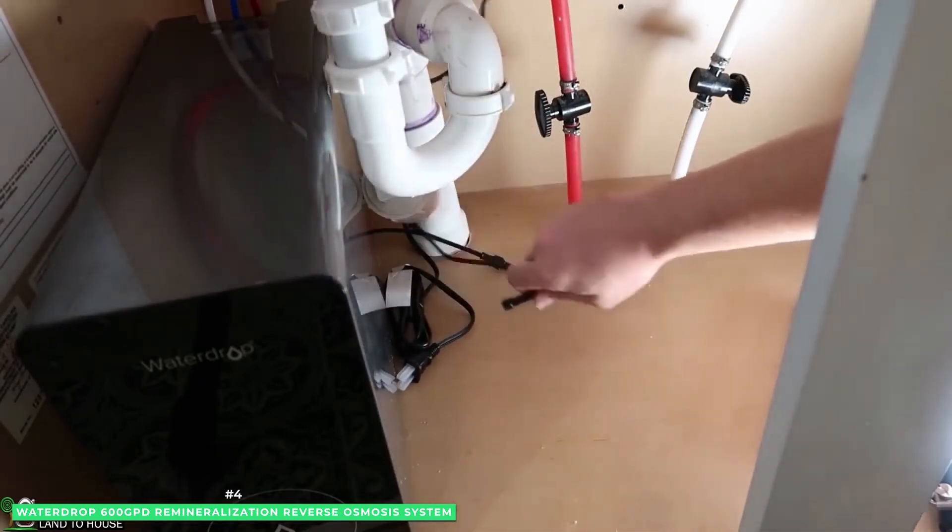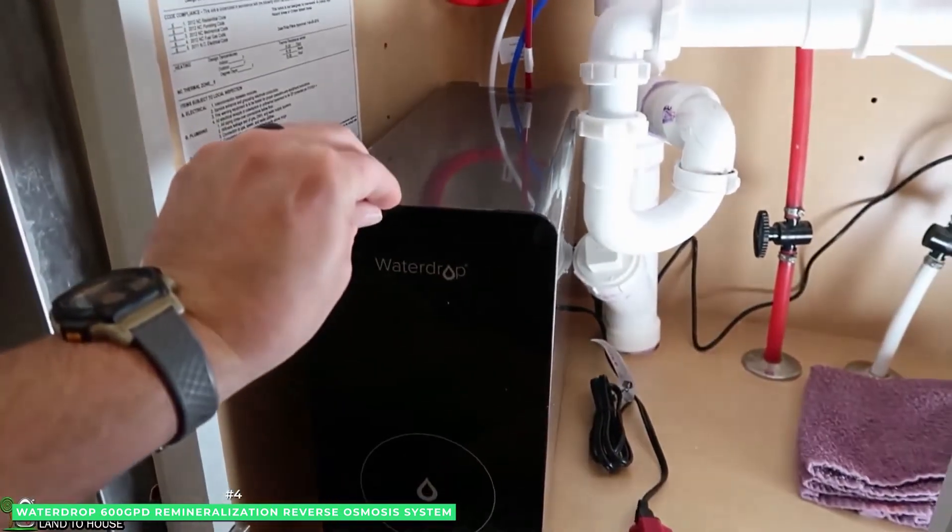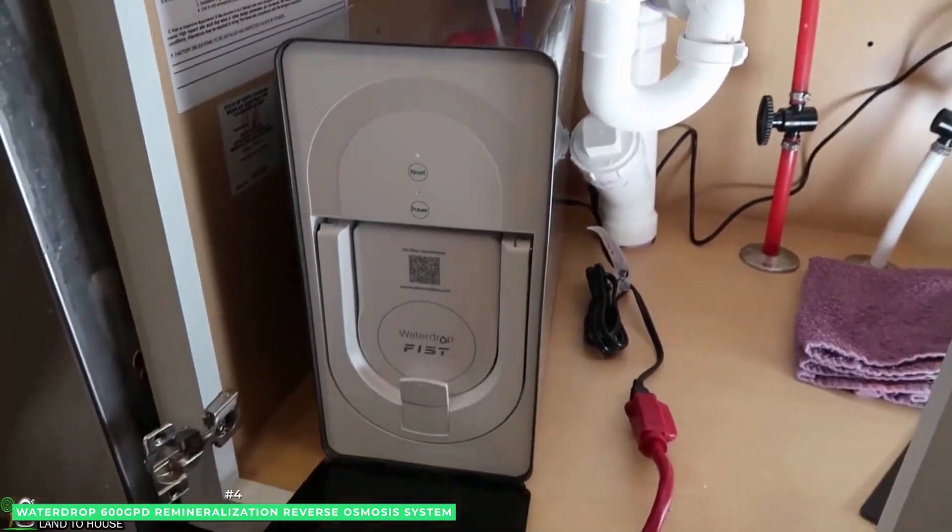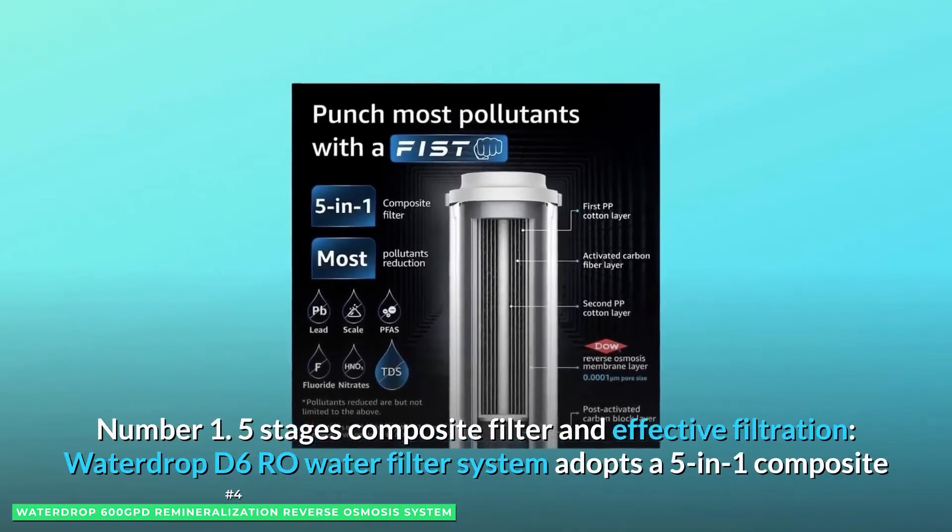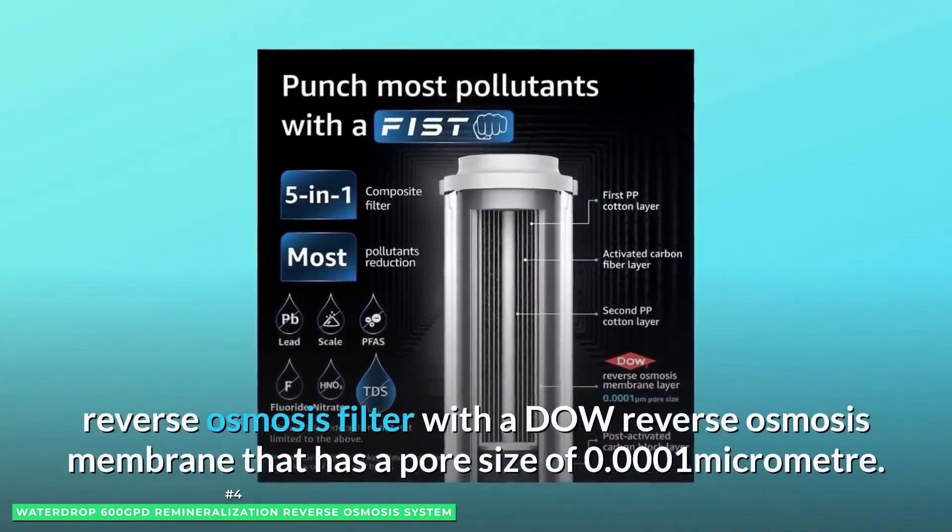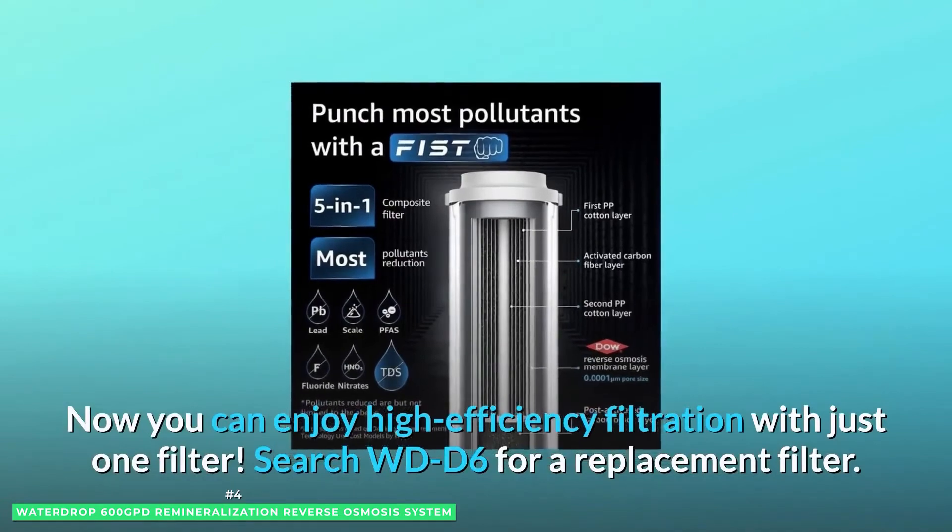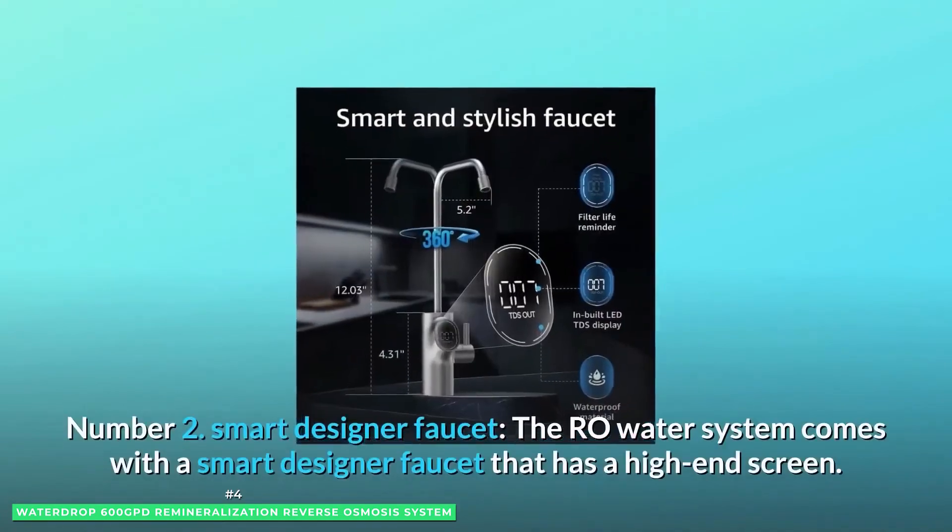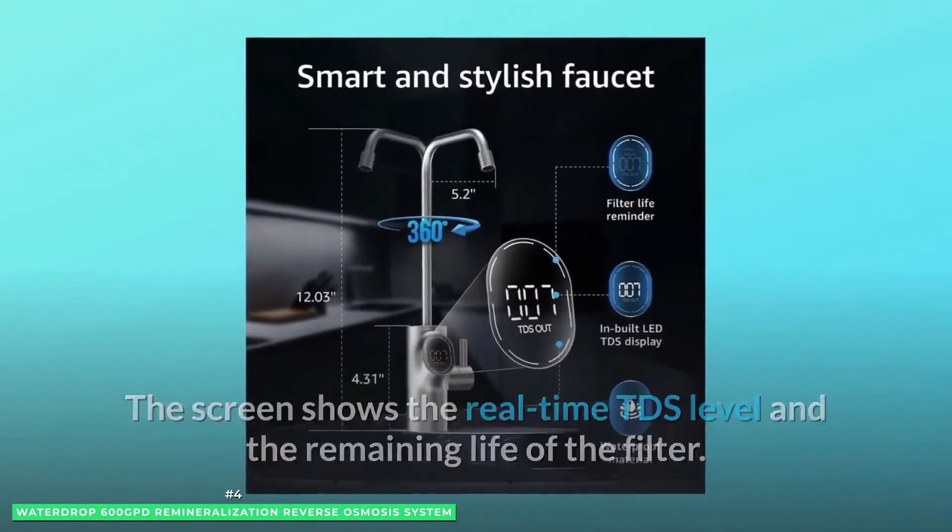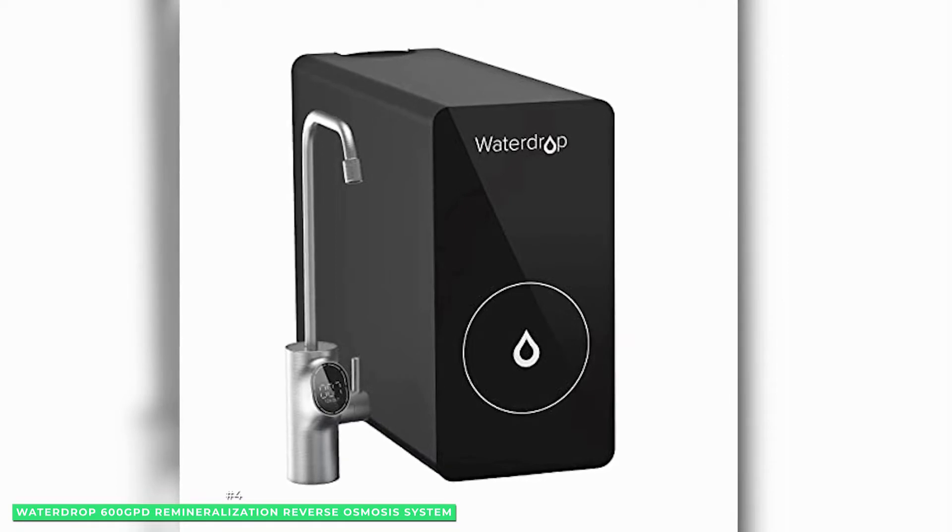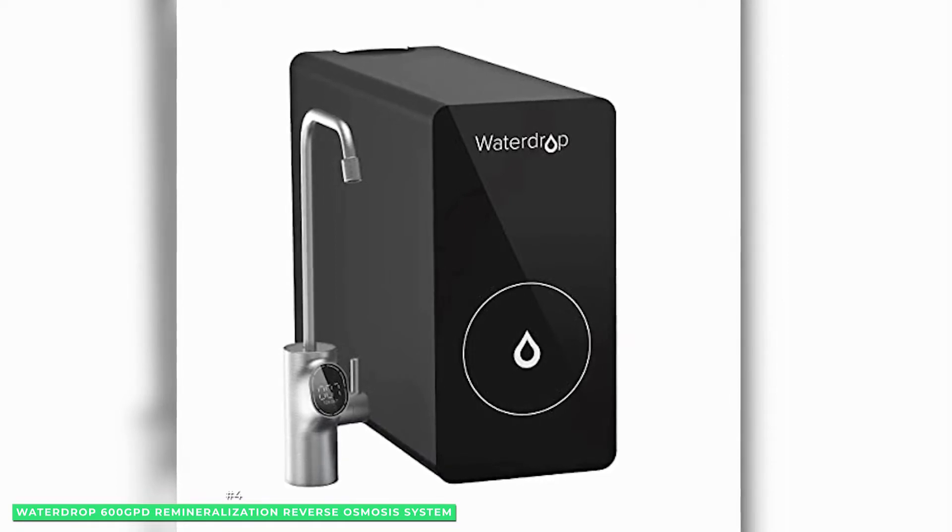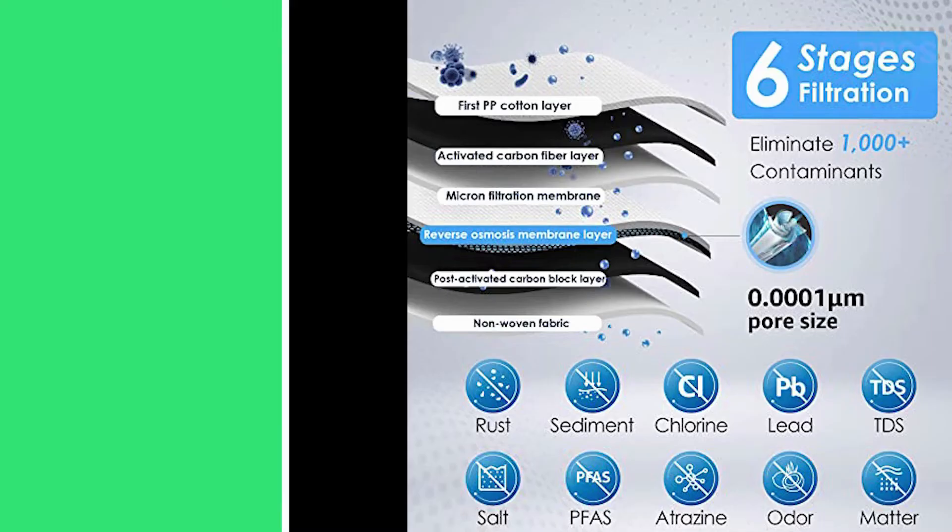Even when you're away from home, Waterdrop's auto-flush feature is constantly working so that when you get back home, you can grab a freshly filtered glass of water, making the Waterdrop D6 600 GPD Remineralization Reverse Osmosis System the best tankless RO system for remineralization.